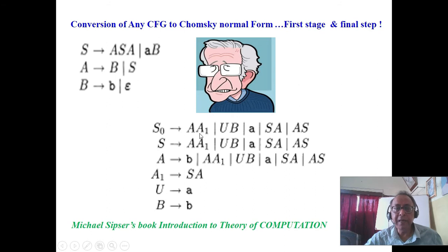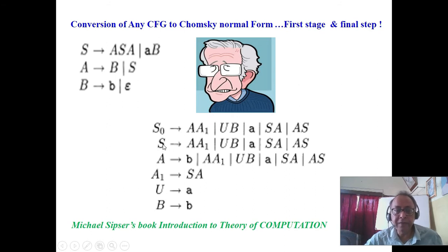Many new variables are incorporated, and you see here A0 is not repeated. This is the ultimate Chomsky's Normal Form result.